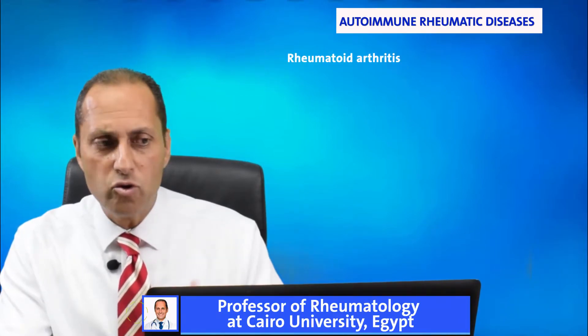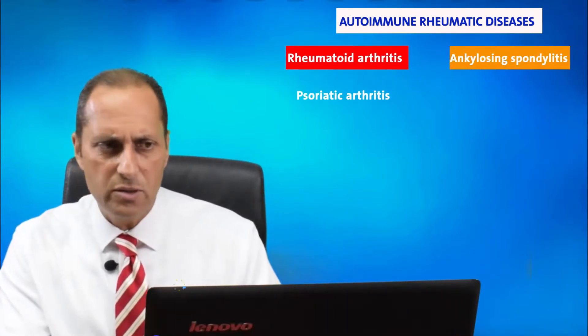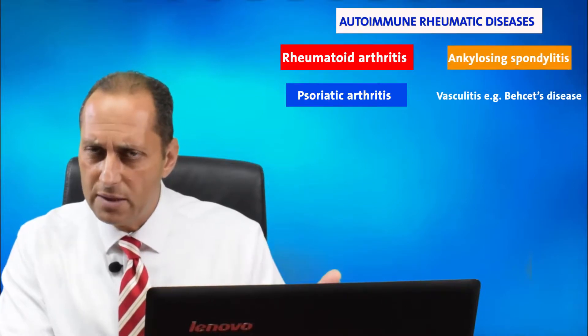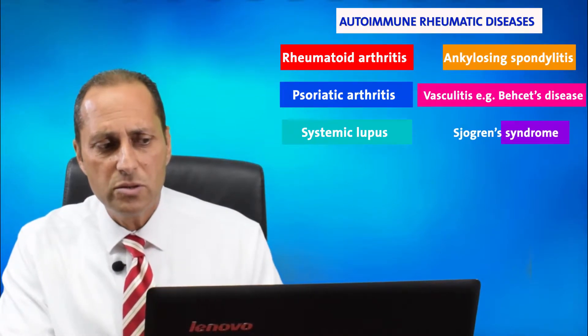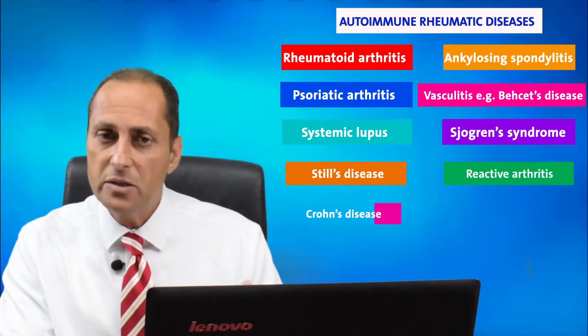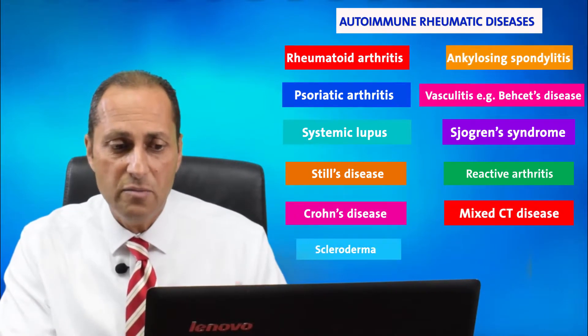Today we are starting a series of videos about autoimmune rheumatic diseases. It addresses any patient who is suffering from any one of the many autoimmune rheumatic diseases. And you can see the names on the screen: rheumatoid arthritis, ankylosing spondylitis, psoriatic arthritis, vasculitis like Behçet's disease, systemic lupus, Sjögren's syndrome, Still's disease, reactive arthritis, Crohn's disease, mixed connective tissue disease, scleroderma.